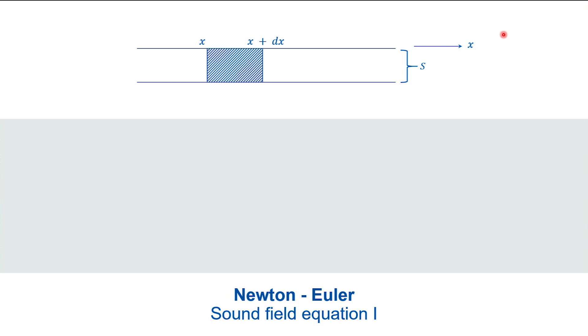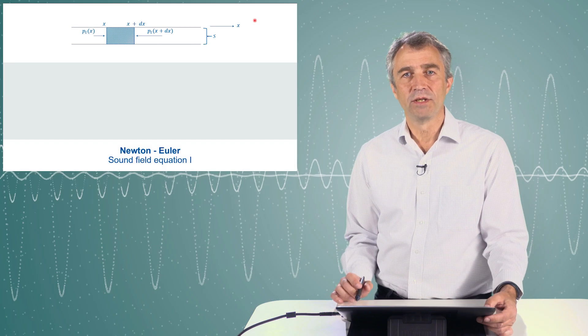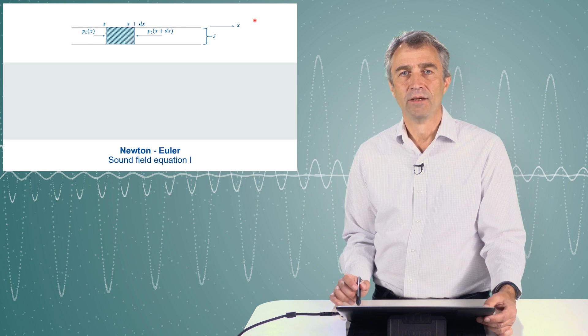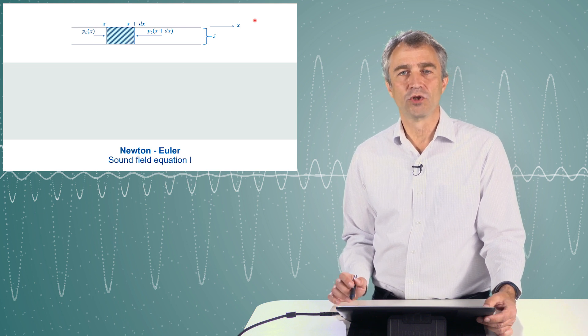The first equation is the Newton-Euler equation. It means force equals mass times acceleration. Everybody is well familiar with that. In this case we calculate the force by considering a pressure difference between the left side and the right side. Anything else would be trivial because then there is no pressure variation at all, so our medium is in rest again, but we are interested in the medium which is not in rest.